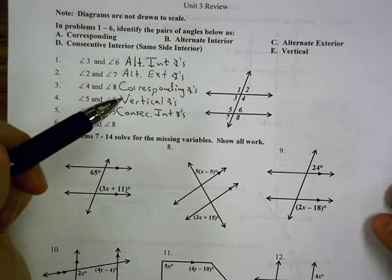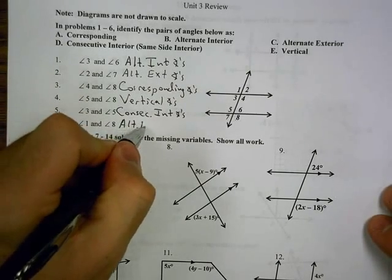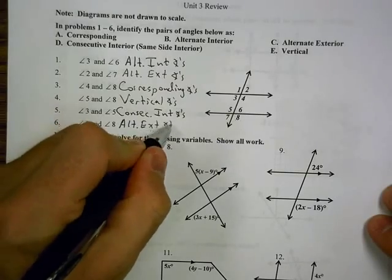And the last one, angles 1 and 8, outside the two lines, opposite sides of the transversal, that would be alternate exterior angles.